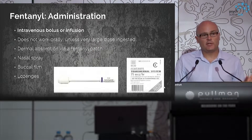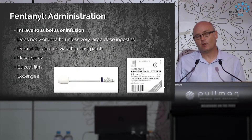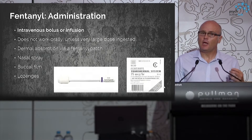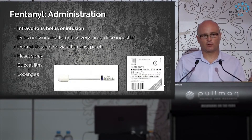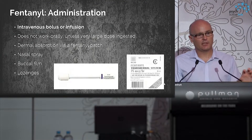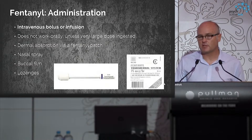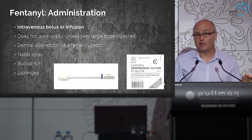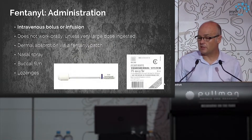It can be administered as a bolus or an infusion. It does not work well orally because it has high first-pass metabolism. It's well absorbed across the gastrointestinal membrane, but when it passes through the liver on its way to the central vascular system it's mainly metabolised, so not much active drug reaches the central nervous system. That said, there have been case reports of fentanyl toxicity after ingestion of many patches.